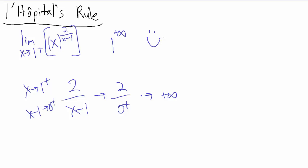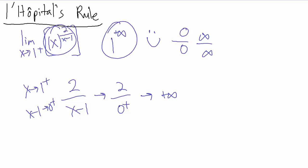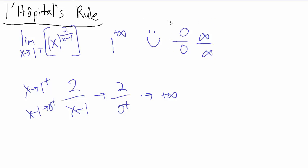1 to the infinity is one of the indeterminate forms, so that tells us we can use L'Hôpital's rule. But we didn't get 0 over 0 or infinity over infinity, so we can't use L'Hôpital's rule directly. We need to do some algebraic manipulations to hopefully get one of those two forms, and then we can apply L'Hôpital's rule.